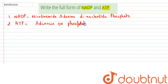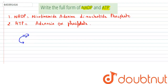ATP is the energy currency of the cell. NADP plays a role in the light reactions of photosynthesis — when the photolysis of water takes place, it converts the water molecule into H⁺ and oxygen.